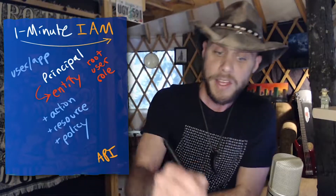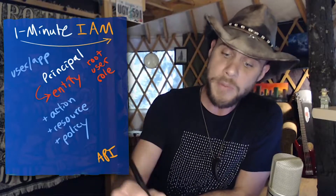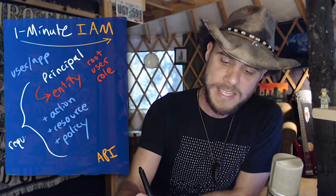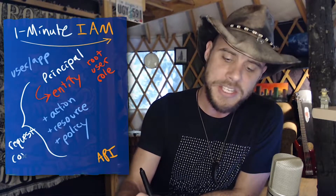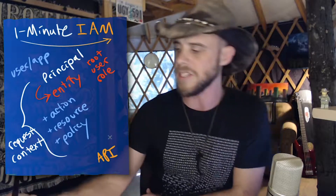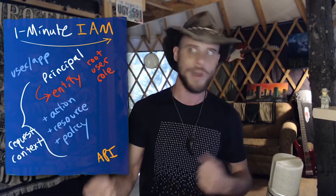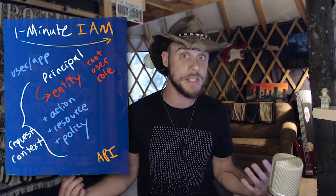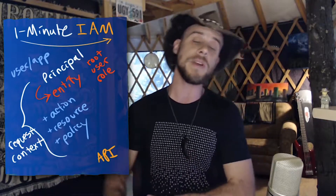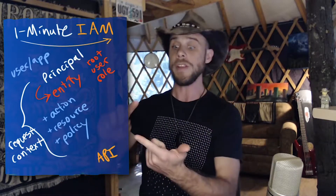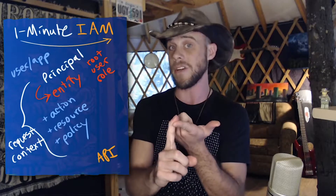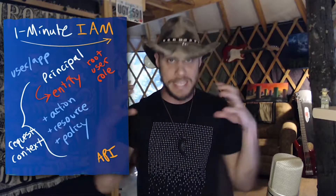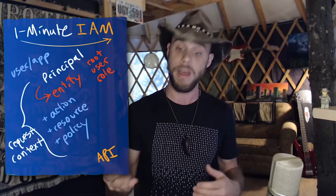The final piece is considering the policies that are going to affect this call. Collectively, AWS refers to all of this as the request context, which contains additional information such as the time of day the request was made, the endpoint that received it, and the region used. AWS looks at the principal, the identity being assumed, the action, the resource, the policies, and the entire request context to determine whether to allow or deny the API call.